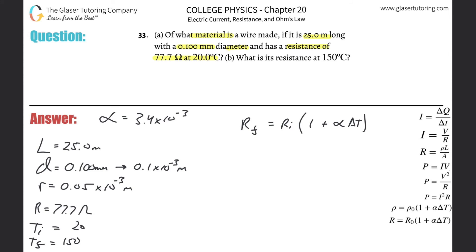Alright. So let's solve for the final resistance now. So the initial they told us was 77.7 times one plus my alpha of 3.4 times 10 to the minus 3, multiplied by that change in temperature. So the final was 150 minus the initial, which was 20.